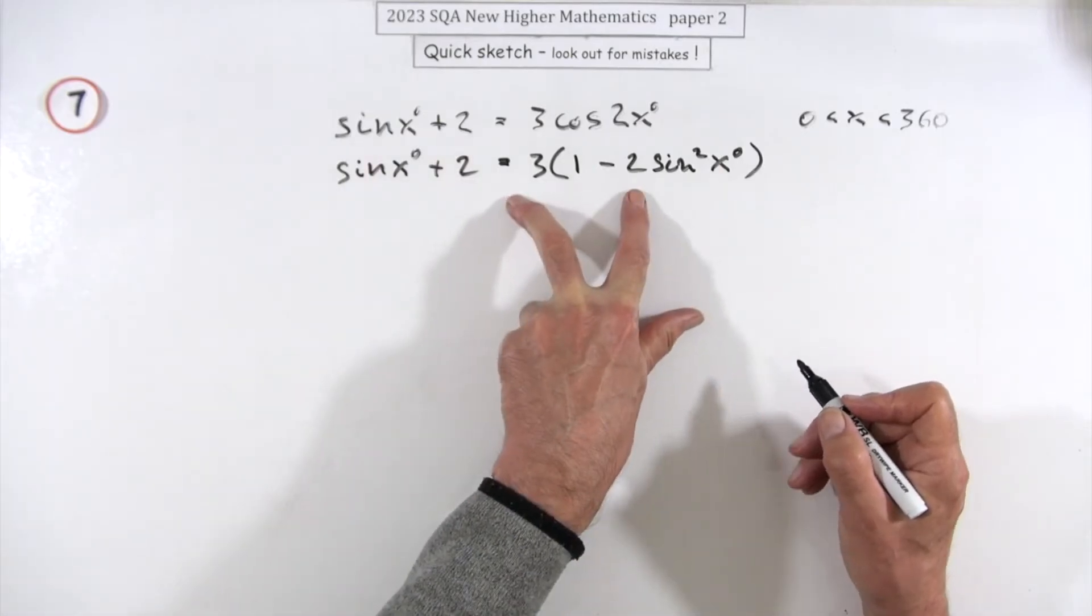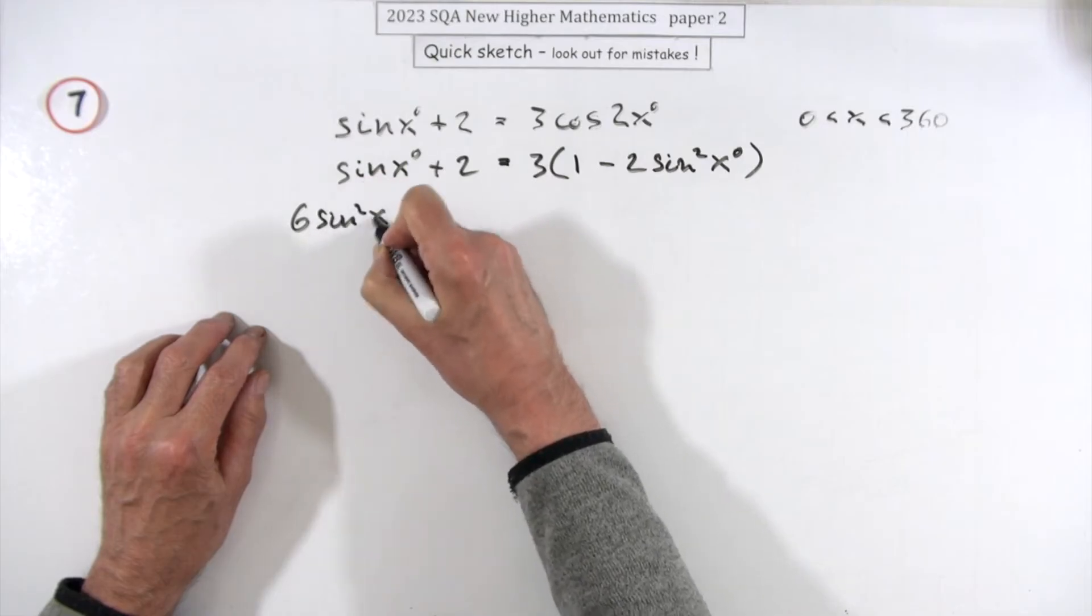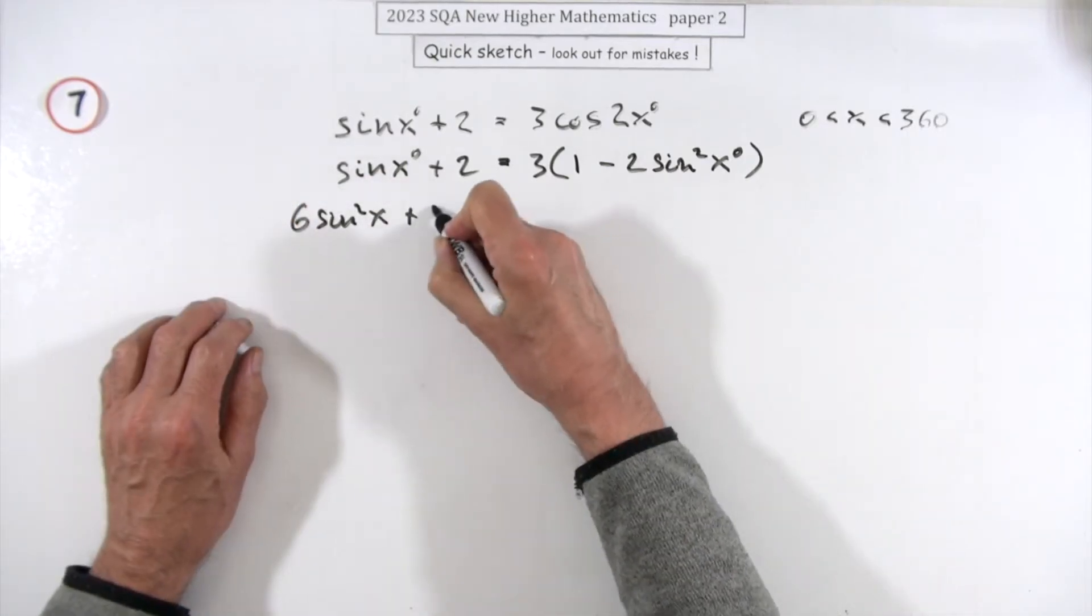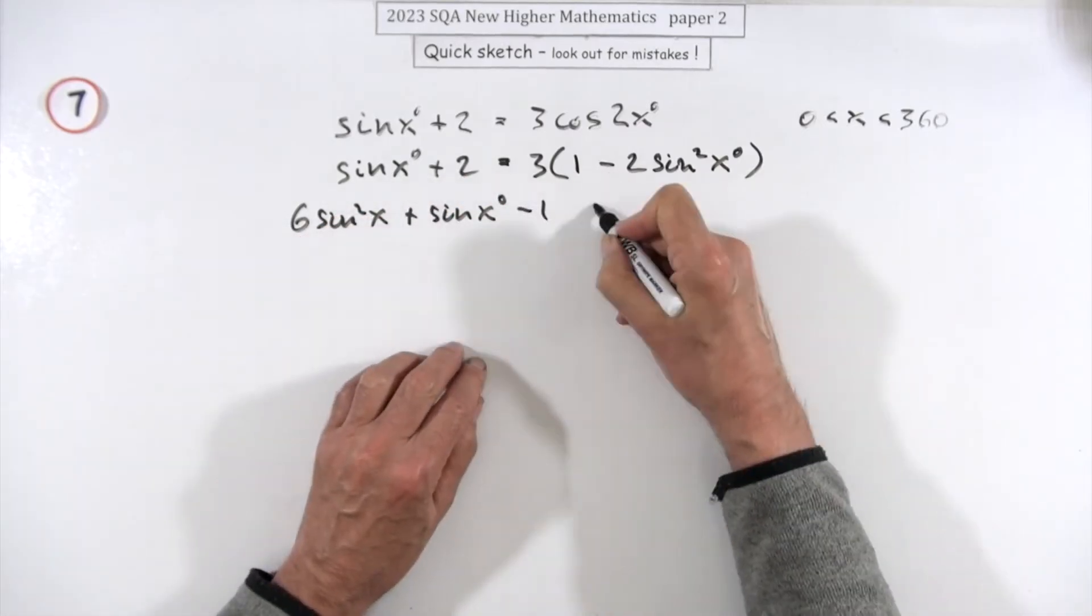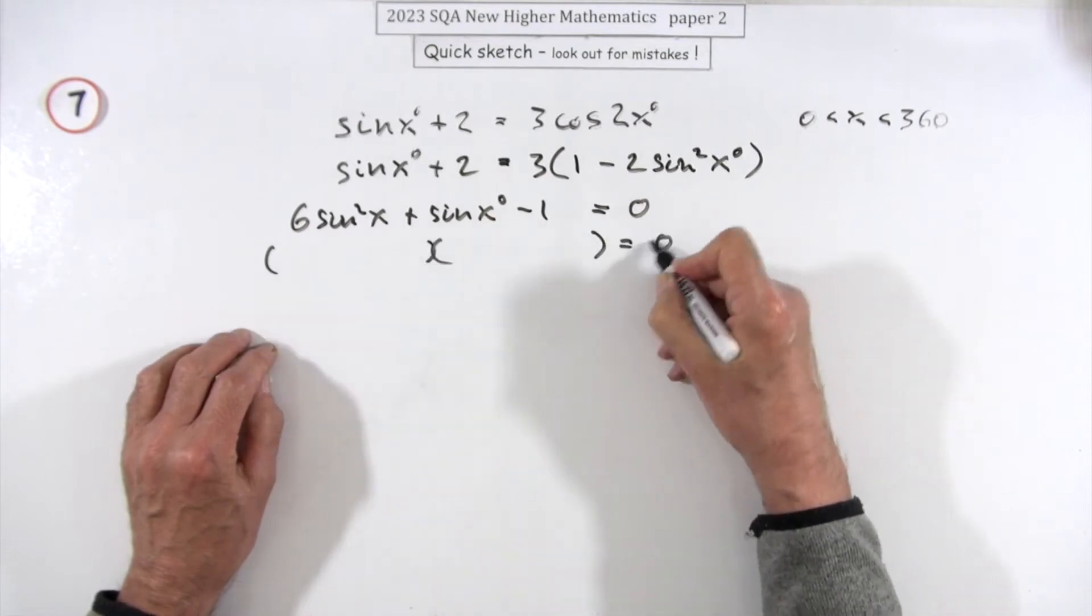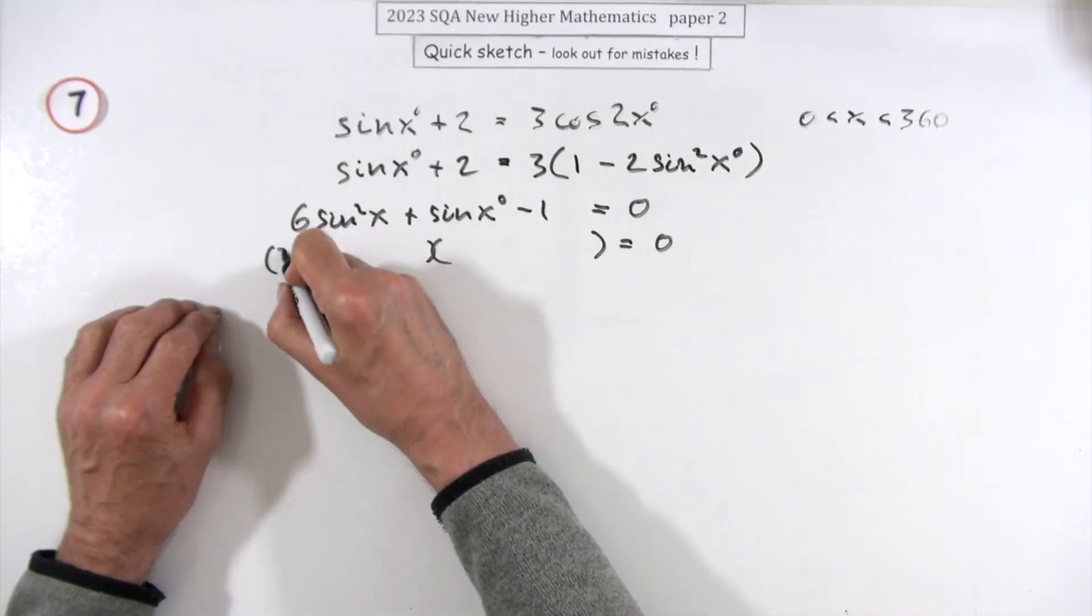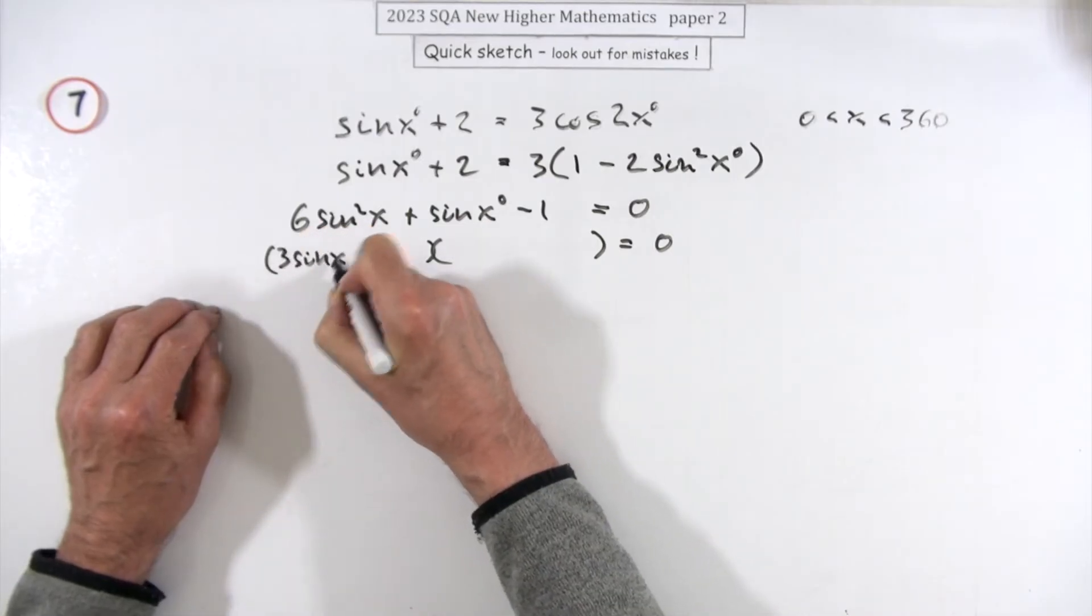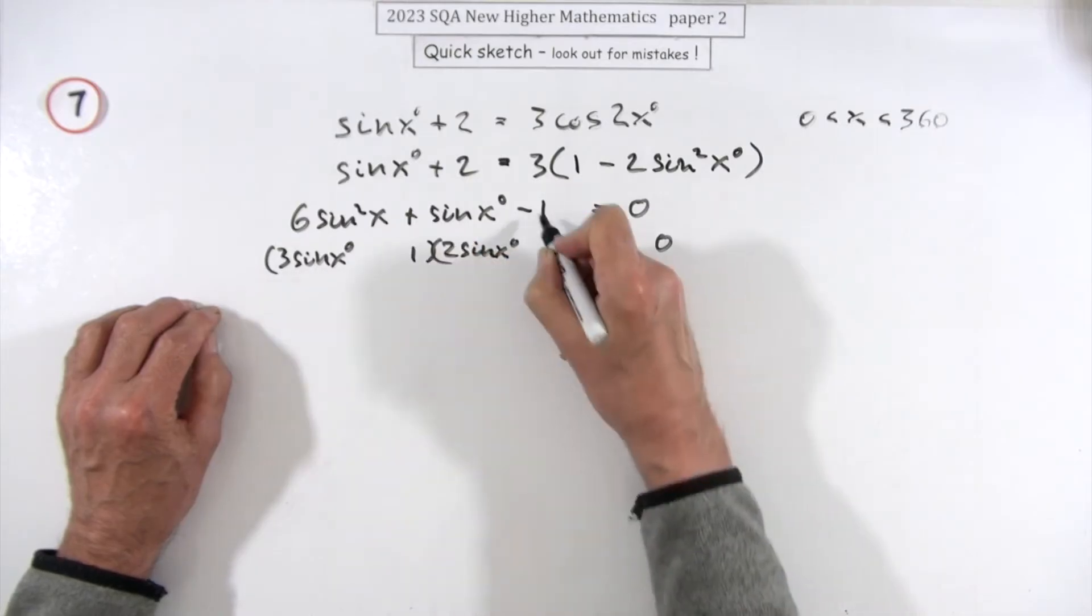So you've got minus 6 goes across as 6sin²x. There's only one mention of sine x, so take away 3 minus 1. So there's the quadratic: 6sin²x + sinx - 1 = 0. Now you just factorize that like any quadratic. There's only a 1 in the middle, so it must be 3 and 2. So 3sinx times 2sinx will give that.